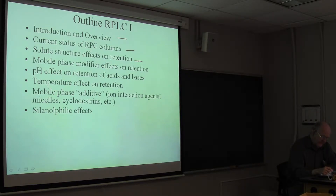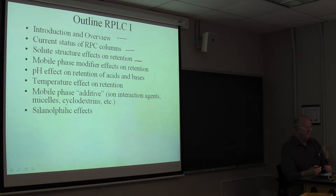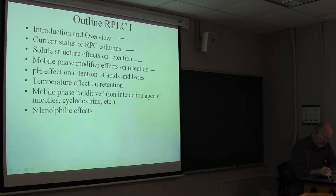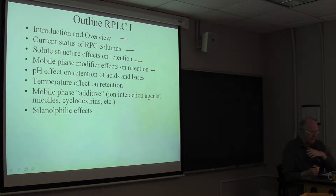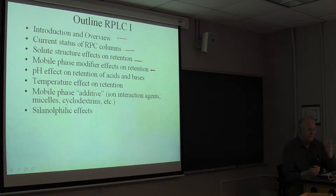We'll talk about solute structural effects on retention — what changes we make in a molecule, will it increase or decrease retention? You have to have some idea of what's going to happen, some idea of when things are going to come out of a column relative to one another. Then we'll talk about mobile phase effects. The mobile phases are typically water with an organic co-solvent called an organic modifier. How much modifier do you need? What happens if you add more? What happens if you change from methanol to acetonitrile to tetrahydrofuran? What does that do to retention and relative retention?